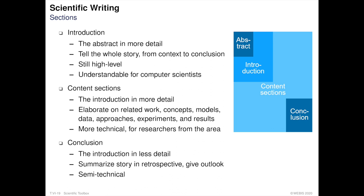The content section is where all the nifty details of your research are explained. It elaborates on all the aspects of the existing literature, your method, and your results. It can be much more technical than the abstract or introduction and expect readers to be acquainted with the specific field of study you talk about.